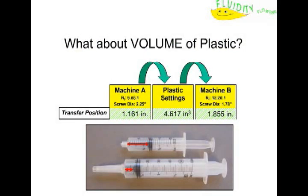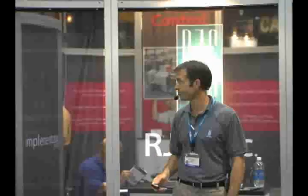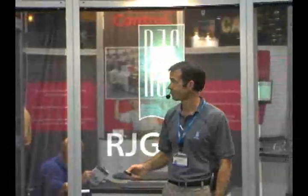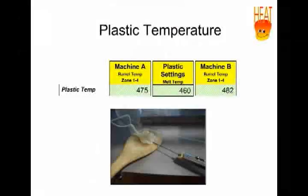Convert from linear inches of flow to volumetric flow so that we can enter the appropriate values into the machine controller. Moving to the third of four plastics variables — we've talked about pressure and flow — now we look at temperature.